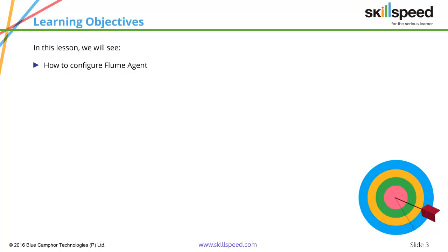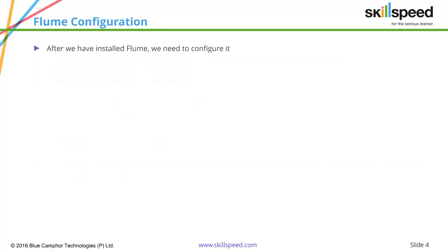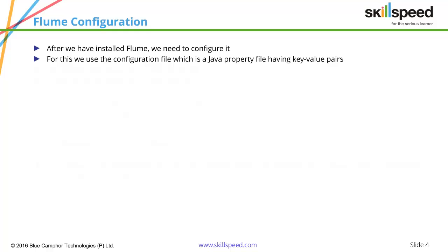In this lesson, we will learn how to configure a Flume agent. Once we download and extract the Flume source files, we have to configure the agent so that it can run. The agent uses a configuration file, which is a simple Java property file having key and value pairs — just like any regular Java property file, wherein you define keys and values. We have to pass values to the keys in the file to determine the correct configuration.